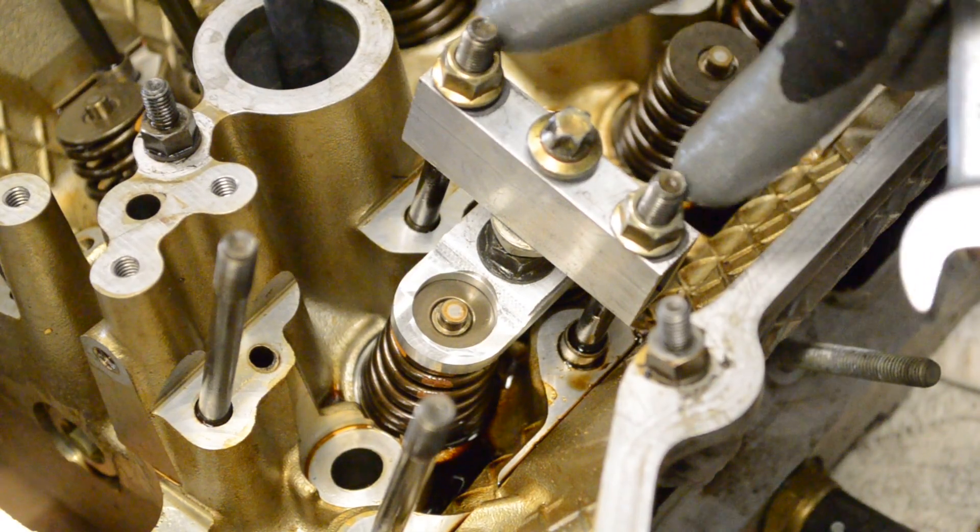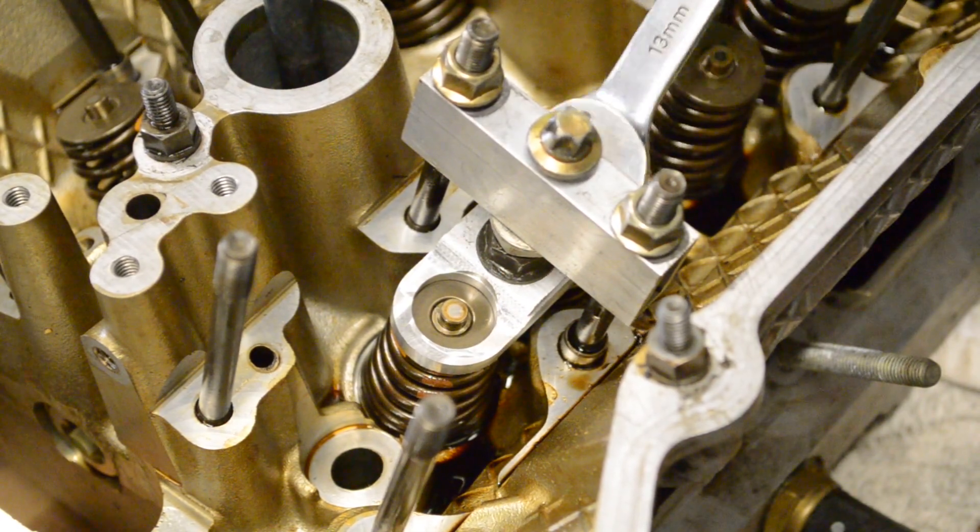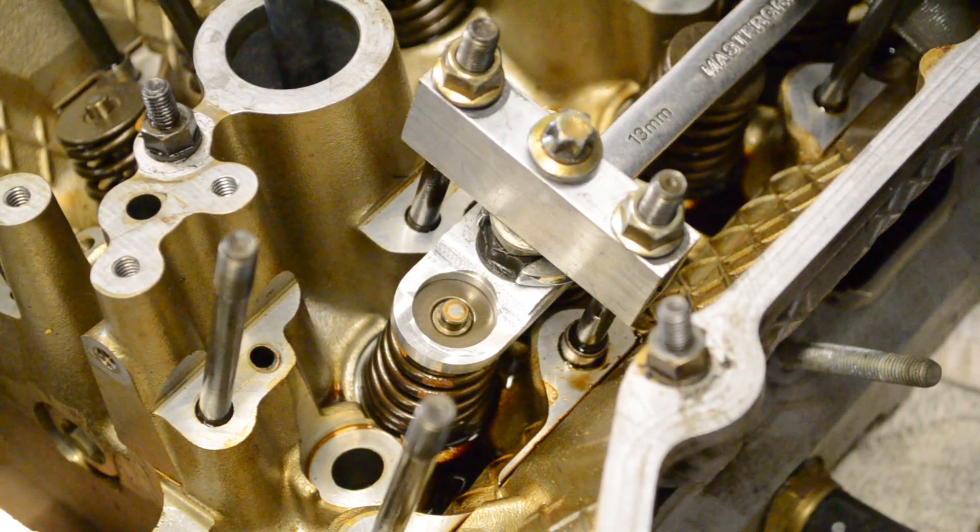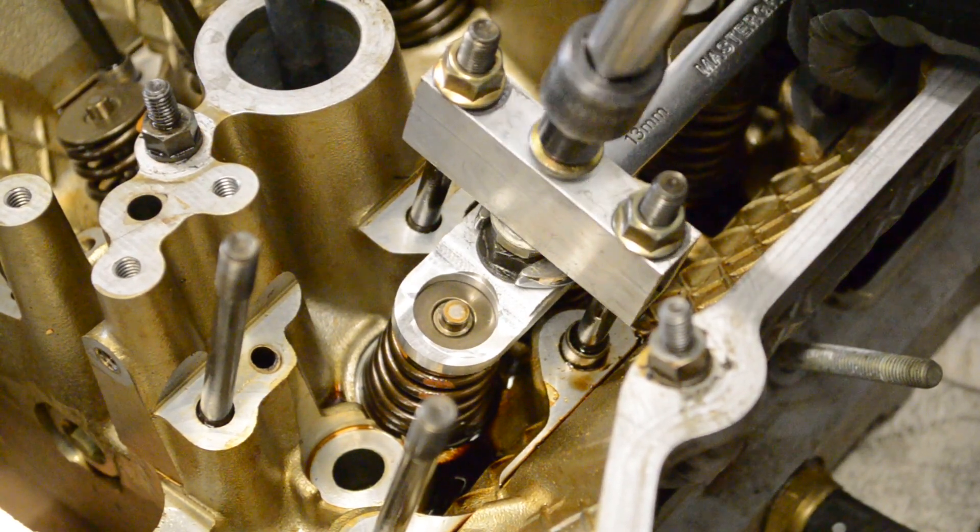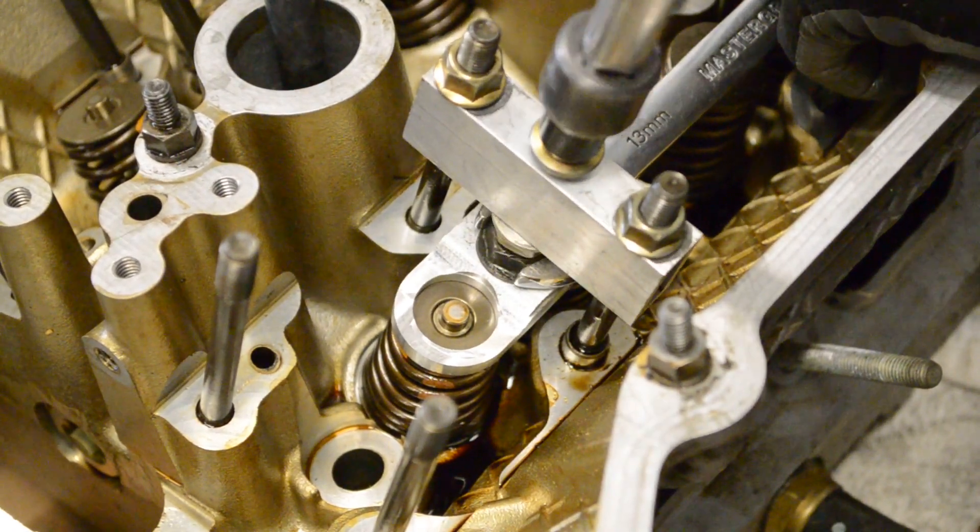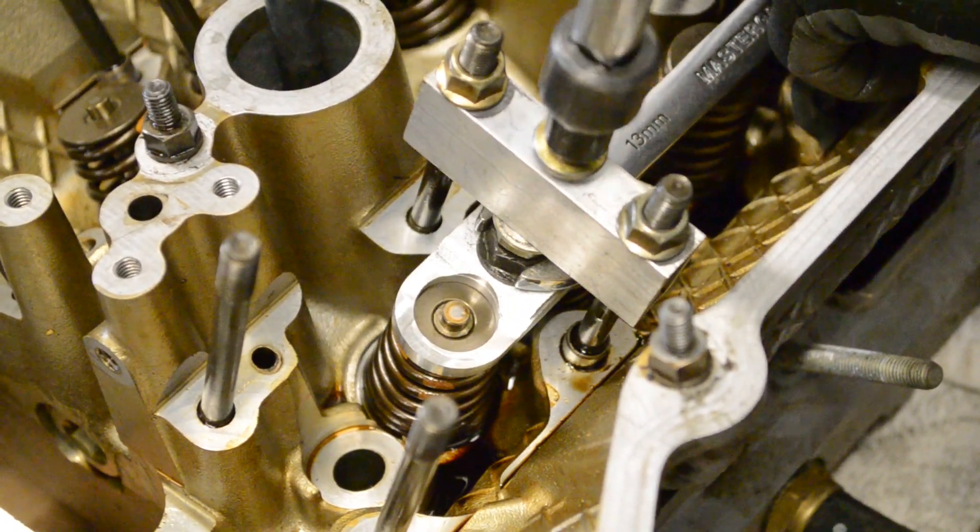So after you drop these two 11mm nuts on there, this is a Torx head bolt and some nuts. And if you recognize this, this is from the half shaft from an E36.